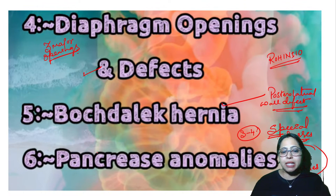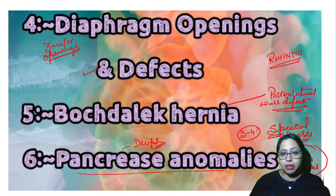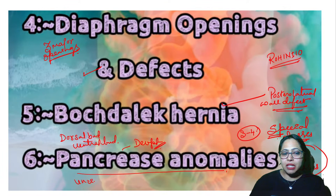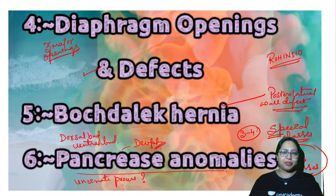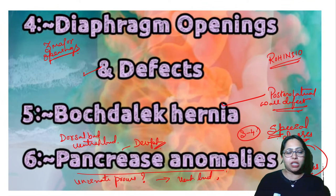For the pancreas, you need to know the anomalies and the development. The pancreas develops from a dorsal bud and a ventral bud. An important frequently asked question: which bud gives rise to the uncinate process? The answer is the ventral bud.